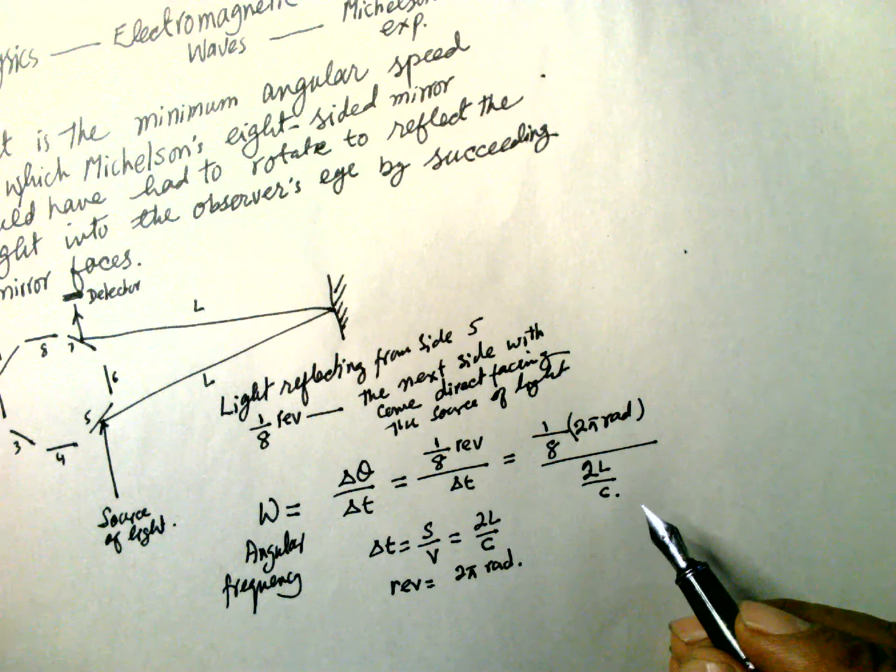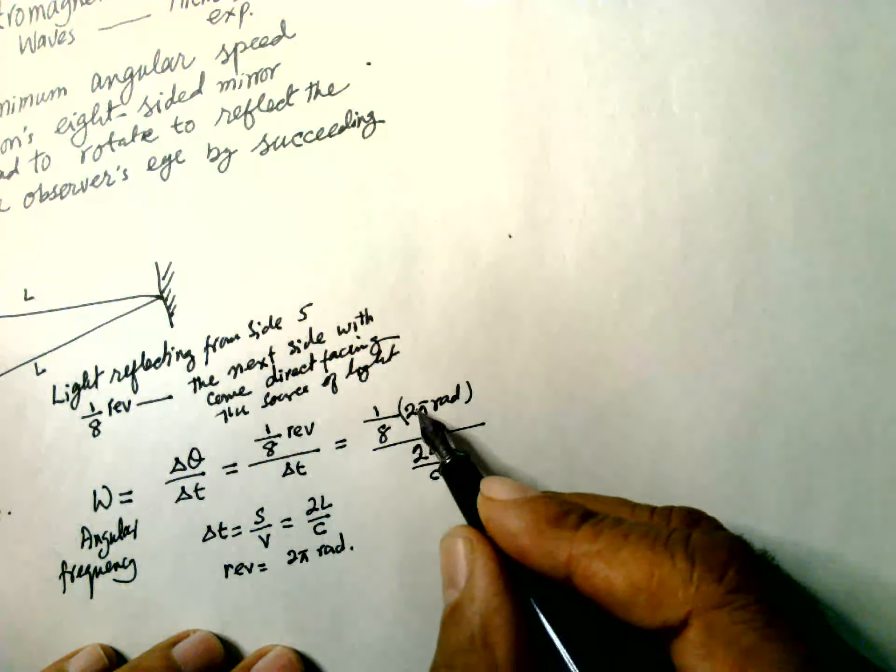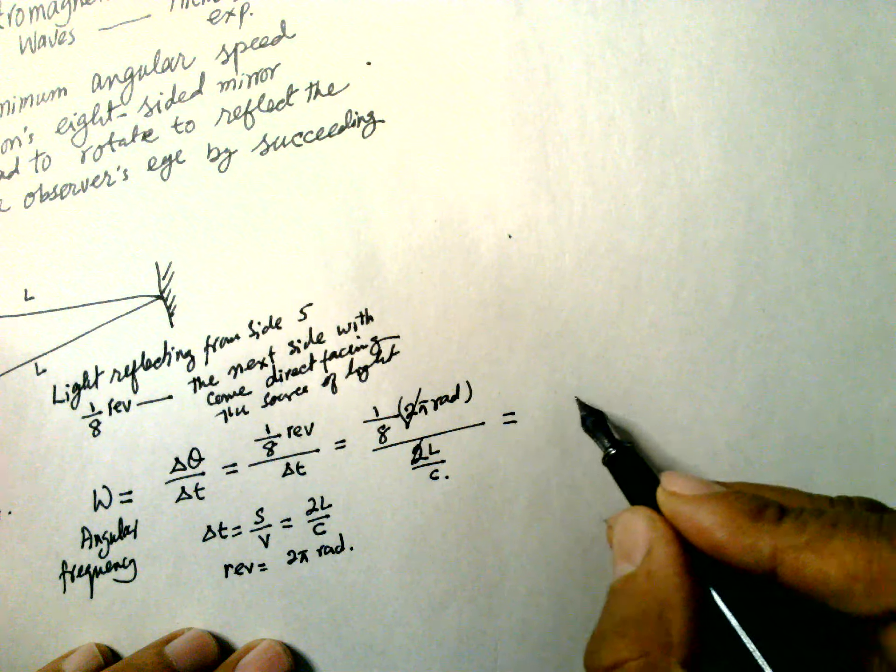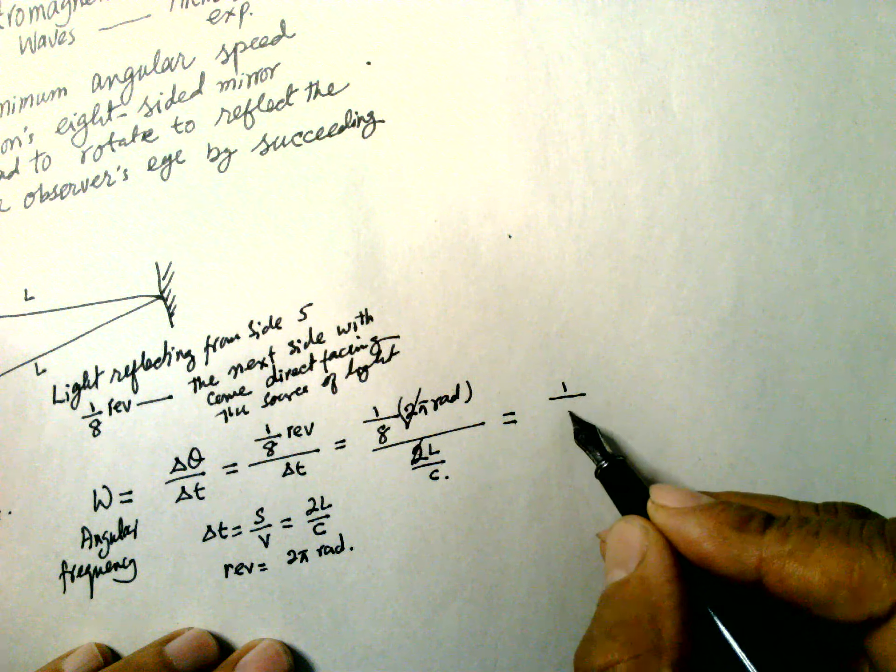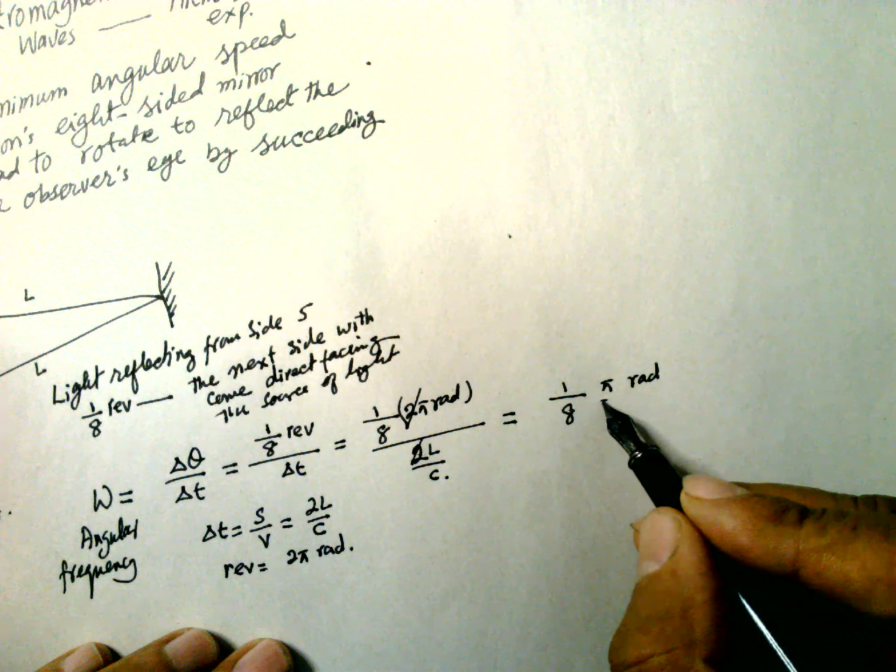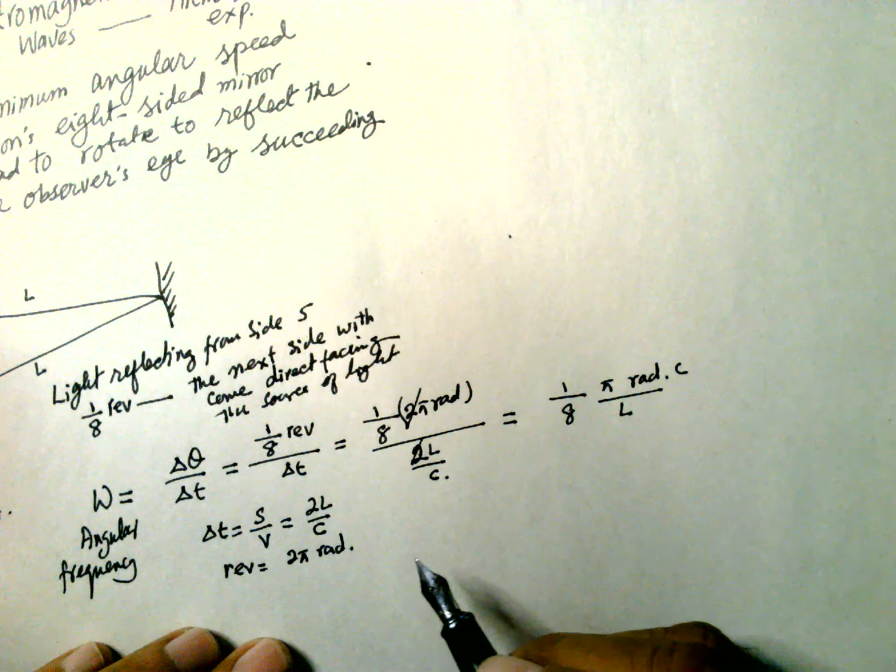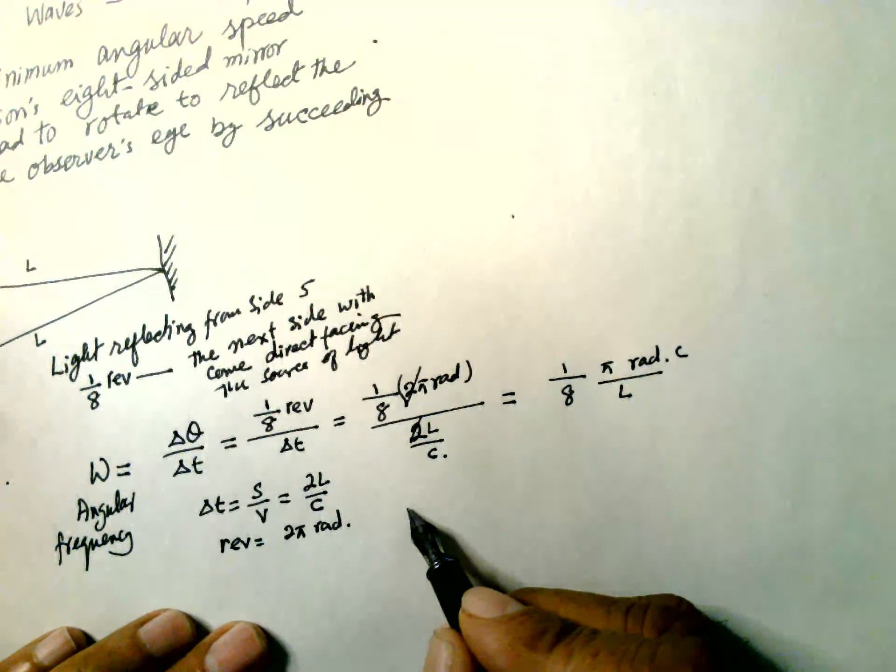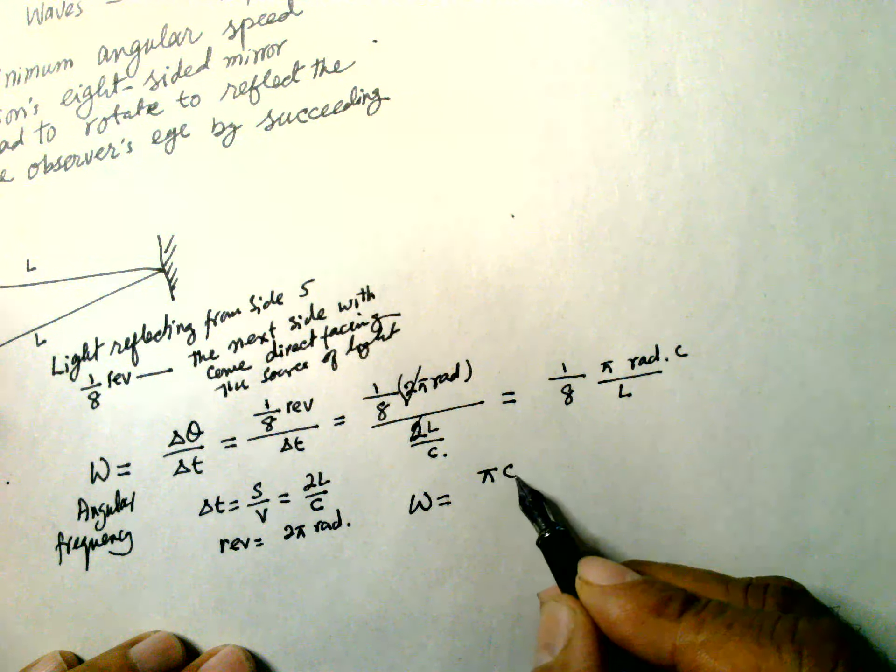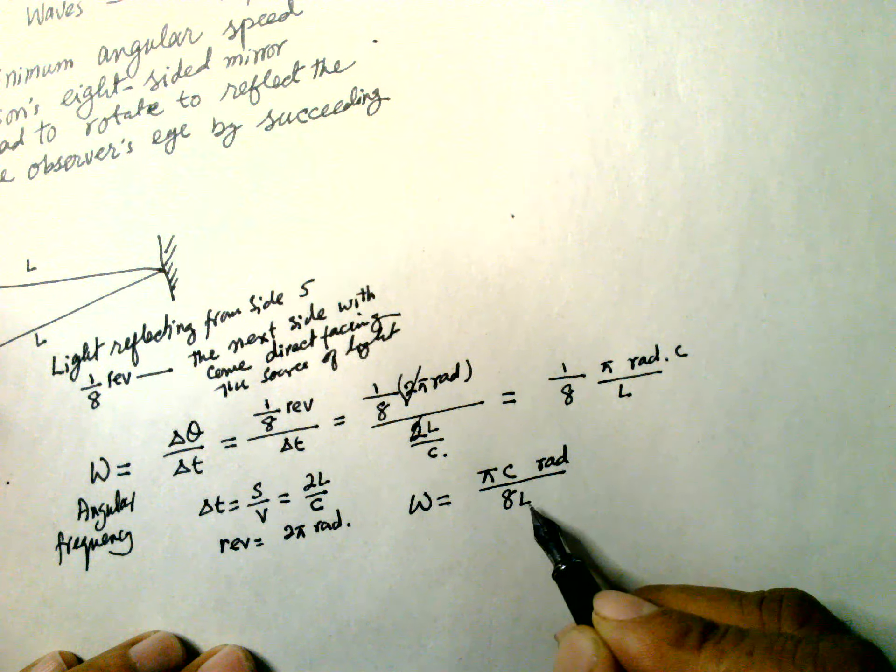So this will be one-eighth π radian divided by L into c. So that is, omega is equal to πc radian over 8L.